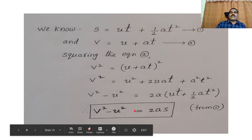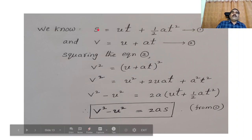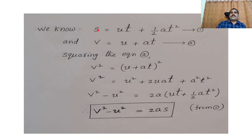Our aim is to find out V square minus U square equals 2AS. To derive this, we use two equations of motion: S equals UT plus half AT square, and V equals U plus AT.